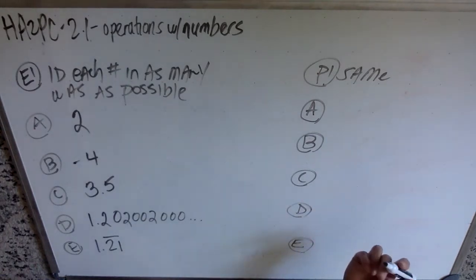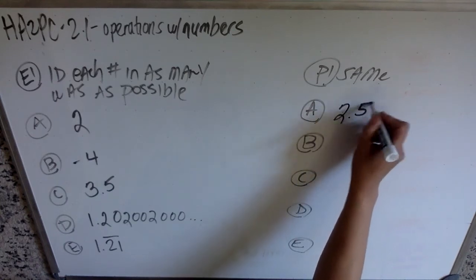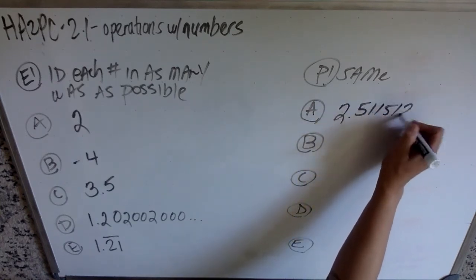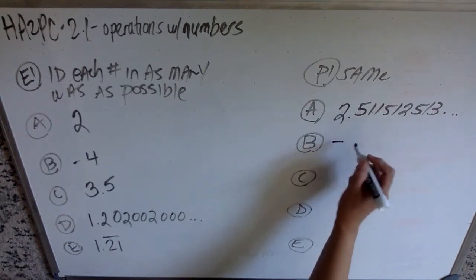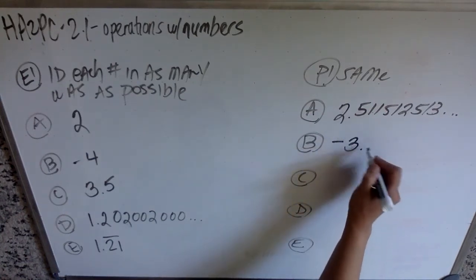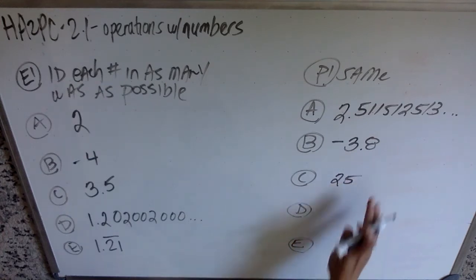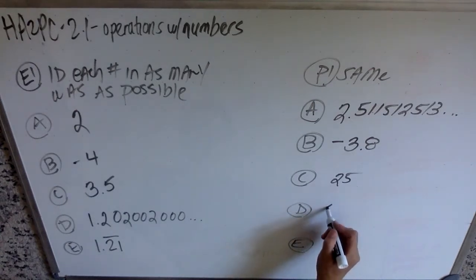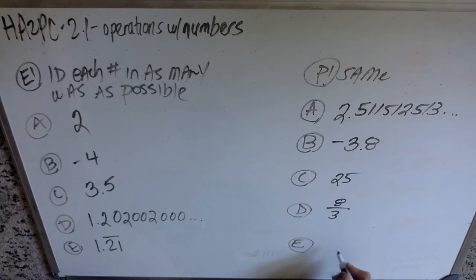And then on the other side, I'm gonna give you, let's do 2.5, 1, 1, 5, 1, 2, 5, 1, 3. Let's do negative 3.8. We'll do a 25. And let's do 8 thirds. And negative 1. So, we're gonna walk through and identify these in as many ways as possible.